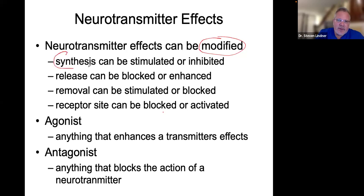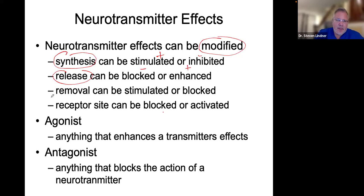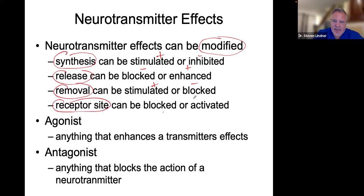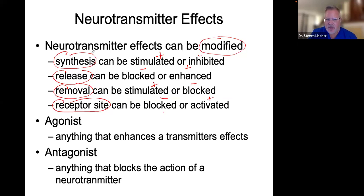Their synthesis — the production of it — can be stimulated or inhibited. The release of them can be inhibited or stimulated. The removal of them can be stimulated or blocked. Or you can manipulate the receptor sites, which can be blocked or activated. So there are different ways of influencing neurotransmitters: the production, the release, the removal, and the receptor sites.